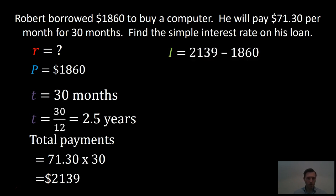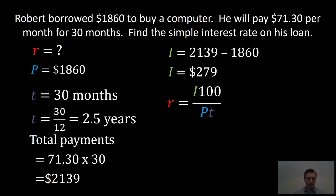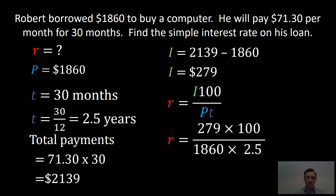Now we need to work out the interest. The total payments were $2,139 and the principal was $1,860. We subtract the principal from the total payments and get the total interest paid as $279. Now we're looking to find R, the interest rate, using the formula where the interest rate is converted to a percentage within the formula. We substitute in all the values and calculate, and we get an interest rate of 6% per annum.